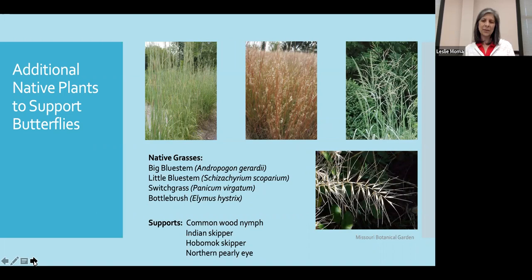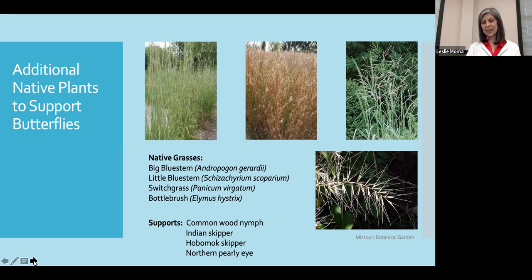Here are our native grasses, which can serve as structural elements within our garden. The big bluestem is wonderful because you have those beautiful blue colors and then this nice shaggy head of seeds at the top. The little bluestem is equally dynamic, as is switchgrass. And then the bottlebrush — the seed head for this one just makes you smile because it's so dynamic. You can see it supports the common wood nymph as well as a variety of skippers that are prevalent here in our area.